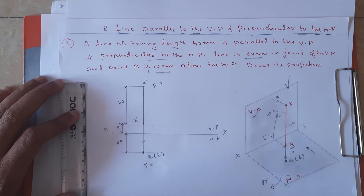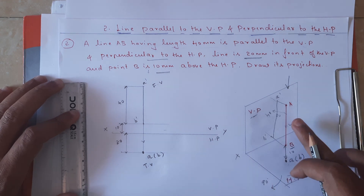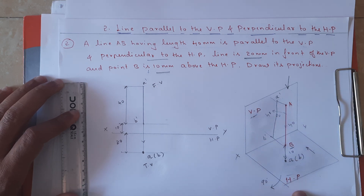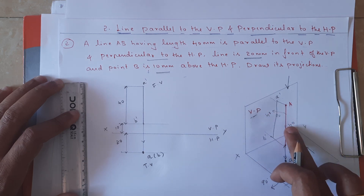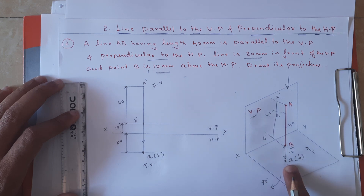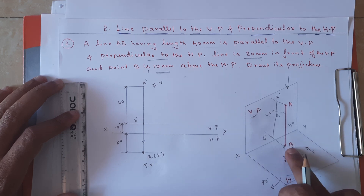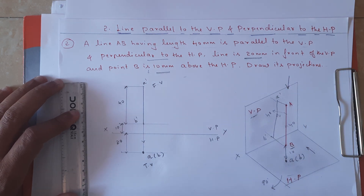This is how we solve the problem when the line is parallel to the vertical plane and perpendicular to HP. We get the true length in the front view since the line is parallel to VP, and in the top view it appears just as a point, represented as a(b) because b is invisible while a is nearer to the observer. I hope you understood. Thank you, namaste.